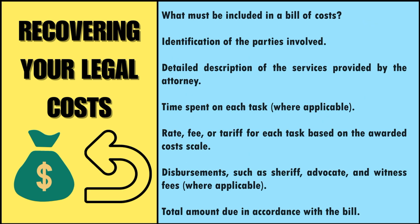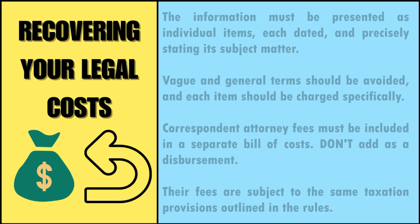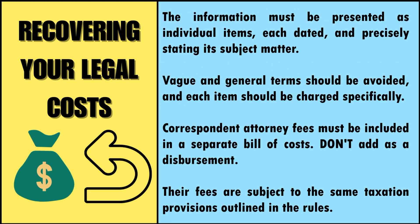What must be included in a bill of costs? A bill of costs typically includes: identification of the parties involved, detailed description of the services provided by the attorney, time spent on each task where applicable, rate, fee or tariff for each task based on the awarded cost scale, disbursements such as sheriff, advocate and witness fees where applicable, and the total amount due. The above information must be presented as individual items, each dated and precisely stating its subject matter. Vague and general terms should be avoided, and each item should be charged specifically.